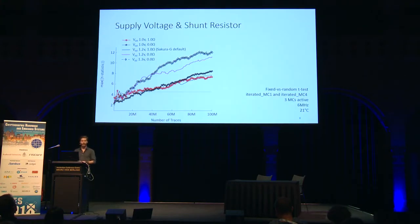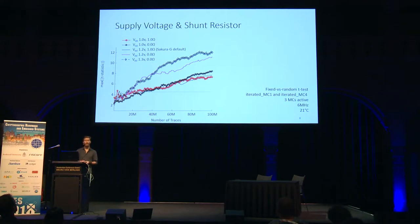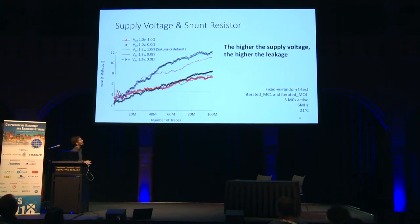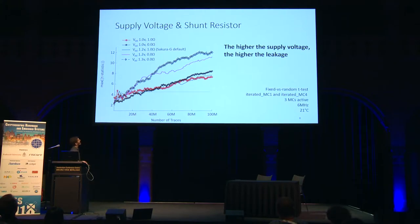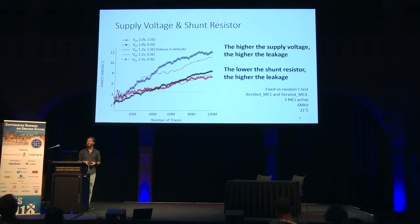Looking at the parameters: with a fixed shunt resistor and increasing power supply voltage — comparing the purple line versus the black diamond line — the rule is clear: the higher the supply voltage, the higher the leakage. Taking the supply voltage fixed and lowering the shunt resistor — from the black line to the purple line — we see that the lower the shunt resistor over which we measure, the higher the leakage.